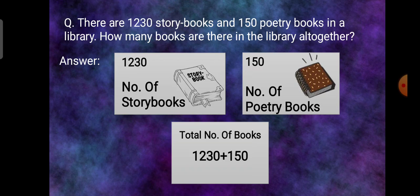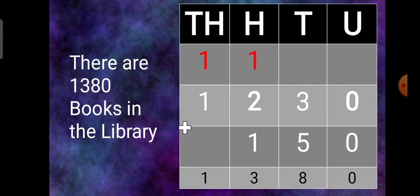The number of story books 1230. Number of poetry books 150. Total number of books 1230 plus 150. Now let's work out the sum.